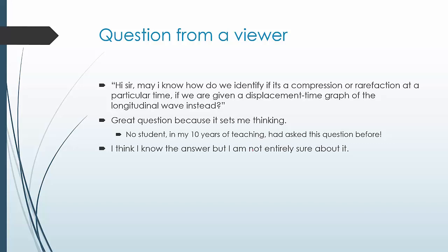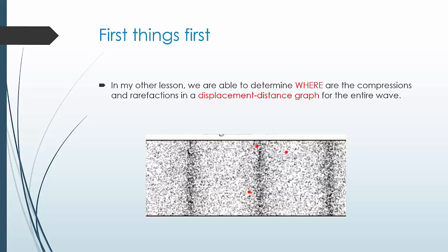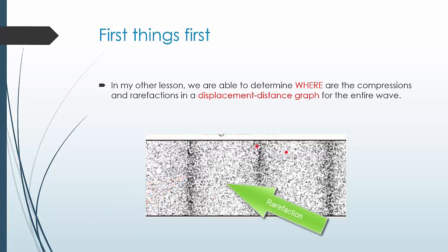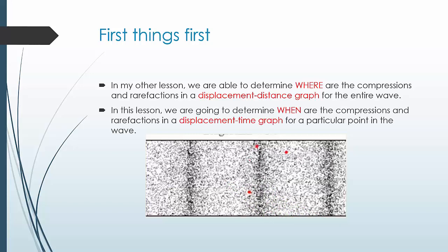I think I know the answer but I'm not entirely sure about it, so this video is created to find out if I'm correct. First thing first — in our other lessons we are actually able to determine where the compressions and rarefactions are in a displacement-distance graph for the entire wave. A displacement-distance graph is sort of like a freeze frame of a wave, so you can see where this part is a compression and where it is sparse — a rarefaction — and so on.